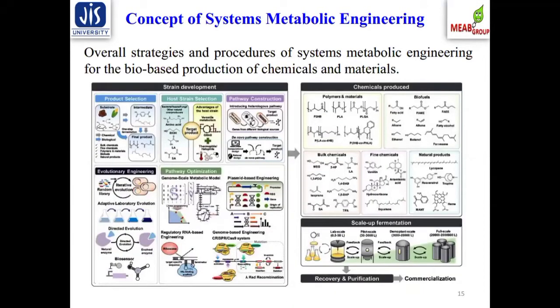This is the overall strategy and procedure of systems metabolic engineering for bio-based production of chemicals and materials. It involves strain development, chemical production, scale-up, followed by recovery and purification. If higher productivity of the target molecule is achieved, downstream processing costs are automatically reduced, making the process more feasible and sustainable toward commercialization. Key steps include product selection, host strain selection, pathway construction, evolutionary engineering, and pathway optimization — all of which we will discuss in greater detail.